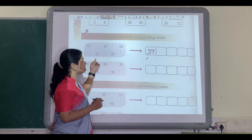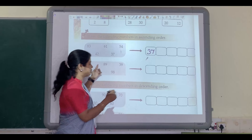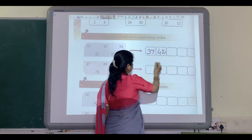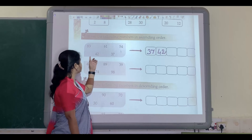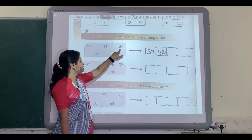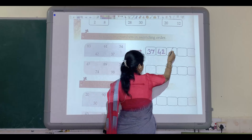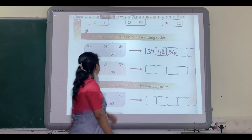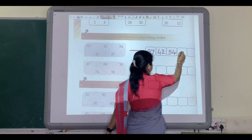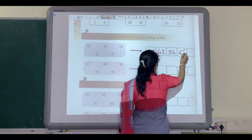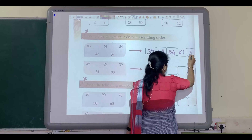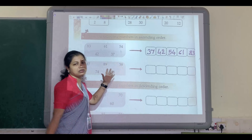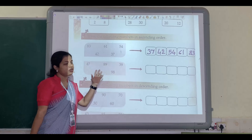Yes, 37 is the smallest number, so we will write 37 here. After 37, which is the smallest number? 42. So we will write 42. After that, which is the smallest number? 54. Then 61, and at last 83.